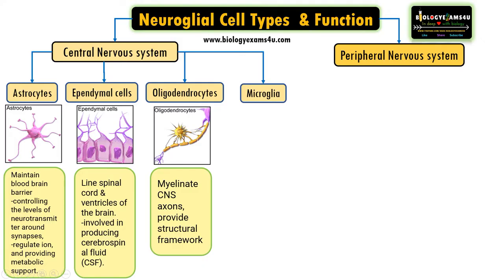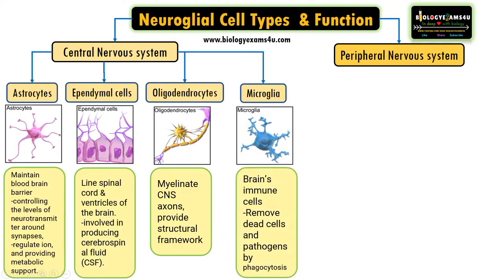The next type is microglia. These are microglial cells — the brain's dedicated immune cells. They are responsible for clearing out dead cells and pathogens by phagocytosis. So the four neuroglial cell types in the central nervous system are astrocytes, ependymal cells, oligodendrocytes, and microglia.